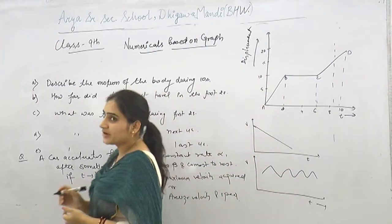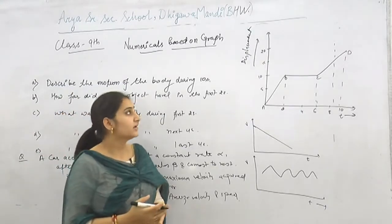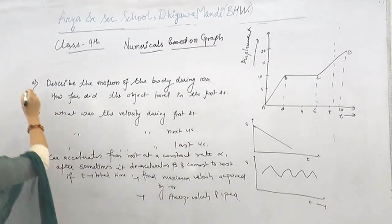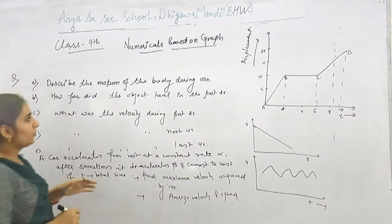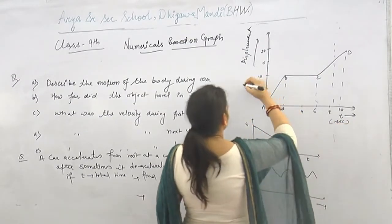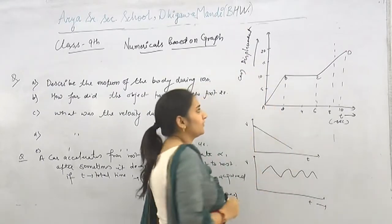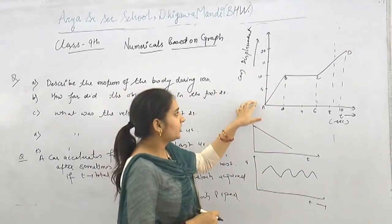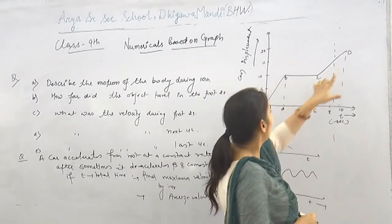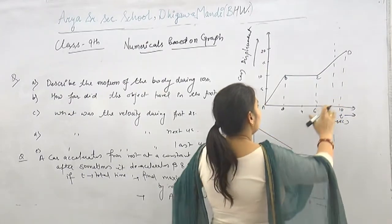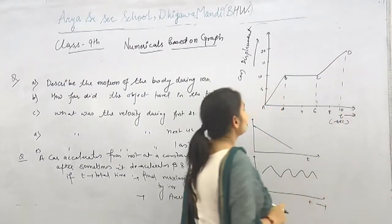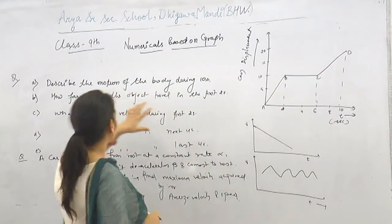Now we will discuss numericals based on graphs. In question 1, you are given a displacement-time graph where time is in seconds and displacement is in meters. The graph is a straight line with values 2, 4, 6, 8, 10. Some questions are given based on this graph.